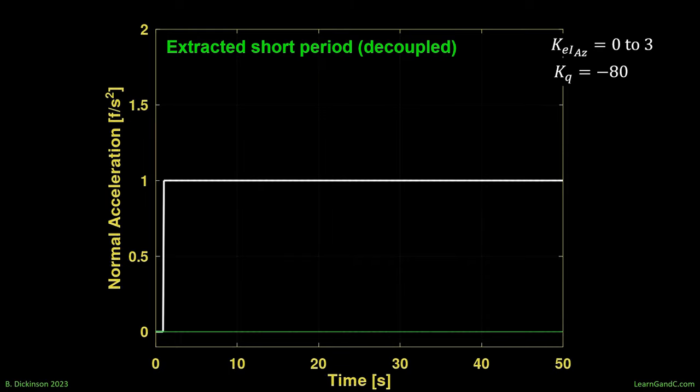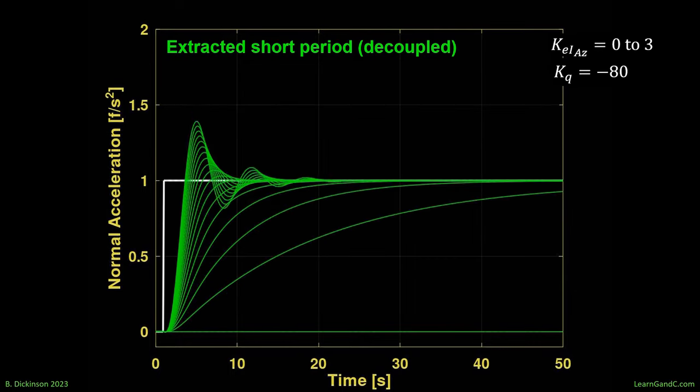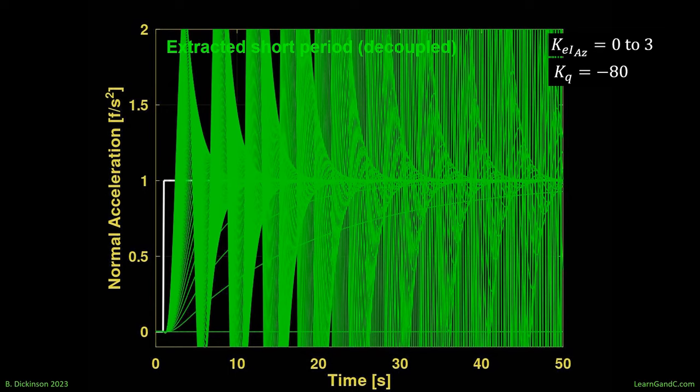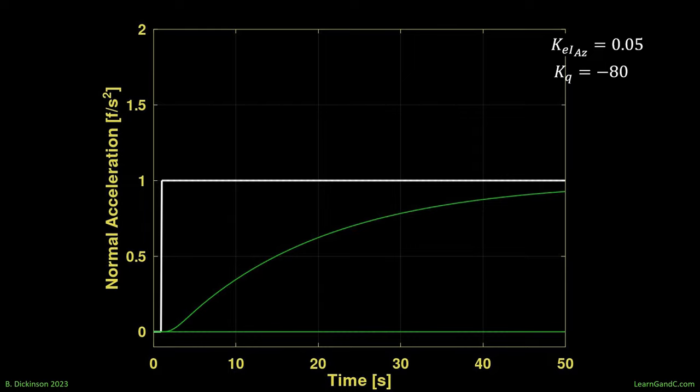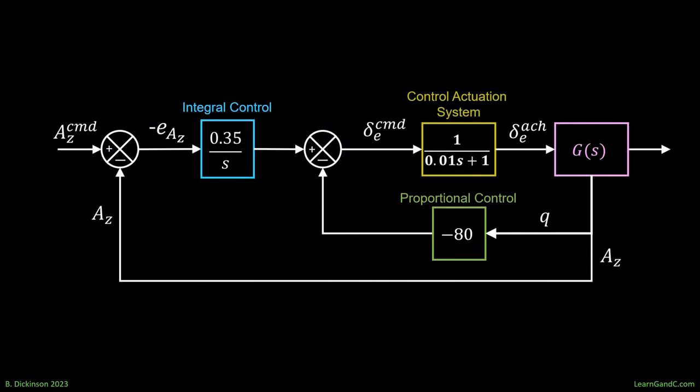In the time domain, we see decreasing rise time prior to the short period poles approaching the imaginary axis, where then oscillation and ultimately instability occurs. Let's break this down frame by frame. With a very small integral error gain of 0.05. 0.1. There. That looks really nice. Slight overshoot. Minimal undershoot. So, we go forward with the selected integral gain. Minus 80 for proportional control.